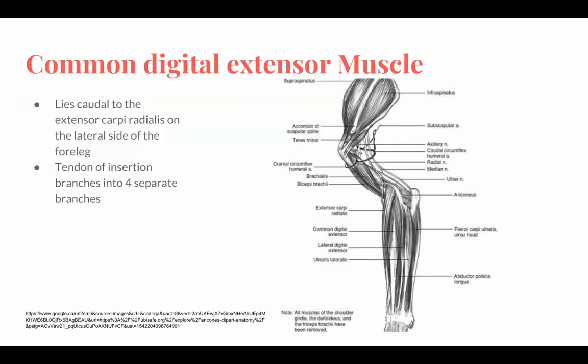Common digital extensor muscle. It lies caudal to the extensor carpi radialis on the lateral side of the foreleg. The tendon of insertion branches into four separate branches, and each branch inserts on the dorsal surface of the proximal phalanx of the major digits. It extends from the lateral epicondyle of the humerus towards the dorsal surface of the distal phalanges of digits 2, 3, 4, and 5. Its function is to extend the carpus and the digits.